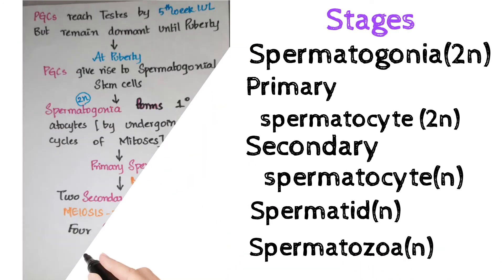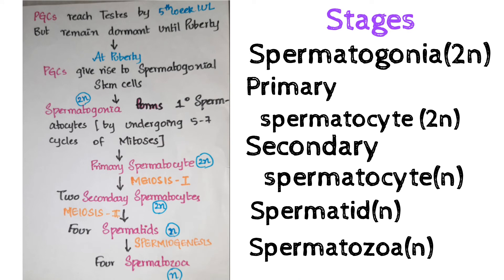The sequence of events in spermatogenesis: primordial germ cells reach the testis by the fifth week of intrauterine life, but they remain dormant until puberty. At puberty, all primordial germ cells give rise to spermatogonia stem cells. The spermatogonia form primary spermatocytes by undergoing five to seven cycles of mitosis. Then the primary spermatocyte undergoes meiosis I to form two secondary spermatocytes.